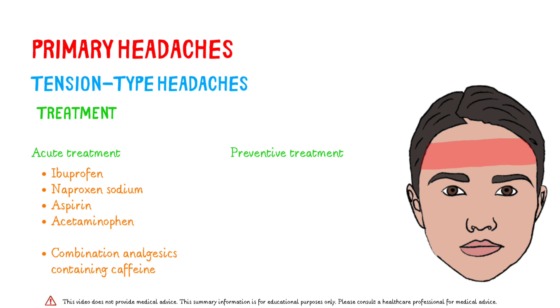Electromyography biofeedback is helpful. Acupuncture, physical therapy, and relaxation training can be options, but there is no solid evidence that they work. The first-line drug treatment for prophylaxis is amitriptyline.